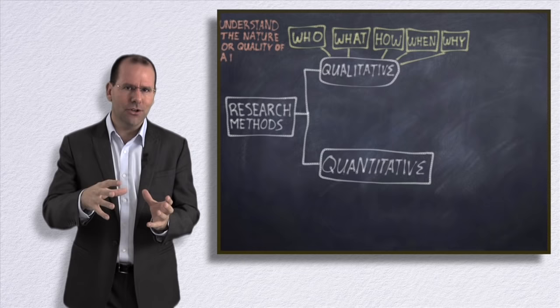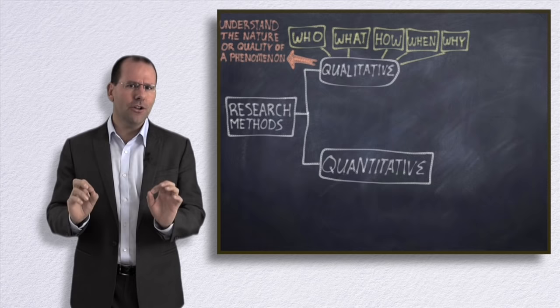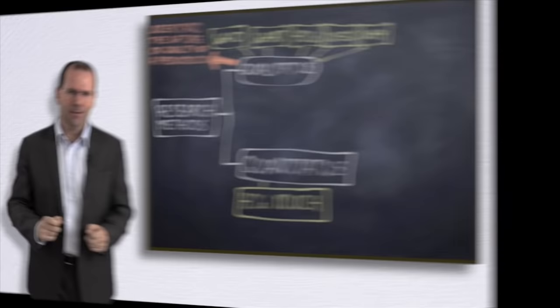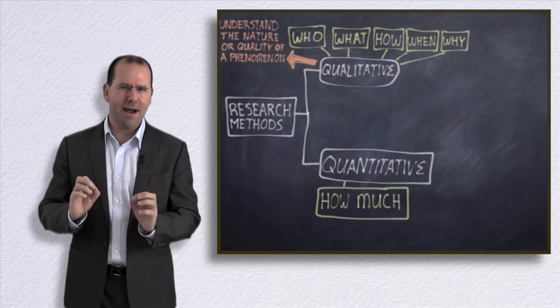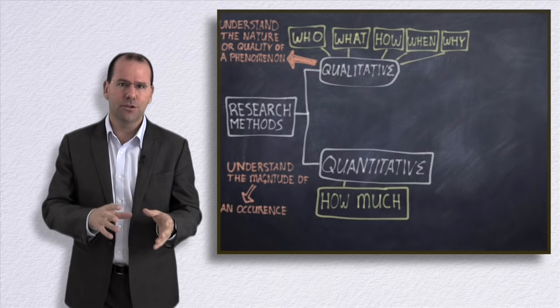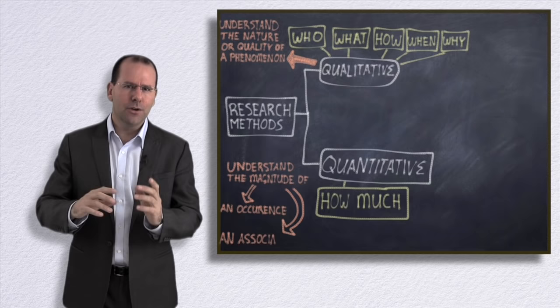By contrast, quantitative research answers the question of how much. It considers the idea of magnitude. When we're talking about the how much of quantitative research, we're talking about the how much of firstly an occurrence, so the incidence or prevalence of a disease in the community, and the magnitude of a relationship, so the association for example between a risk factor and an outcome.